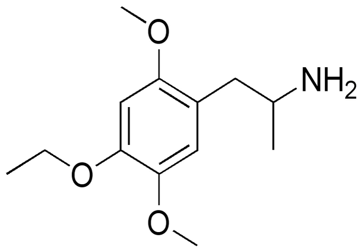2,5-dimethoxy-4-ethoxyamphetamine is a psychedelic drug of the phenethylamine and amphetamine chemical classes. It was first synthesized by Alexander Shulgin. In his book PiHKAL, he lists the active dose range as 20–50 mg, and the duration as 10–14 hours.